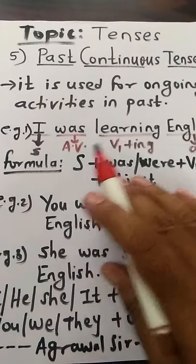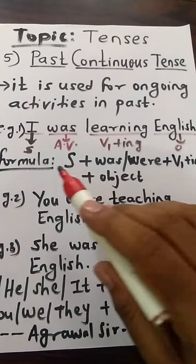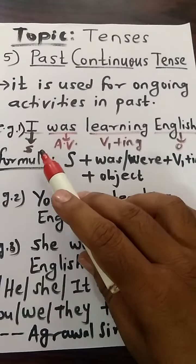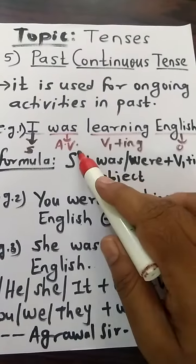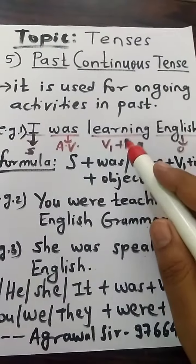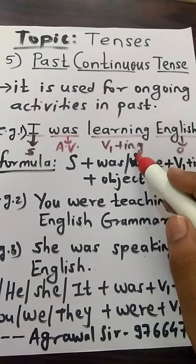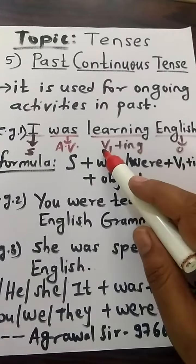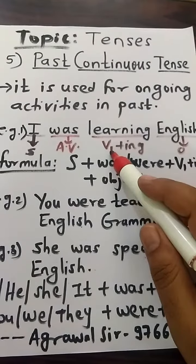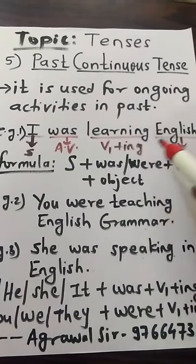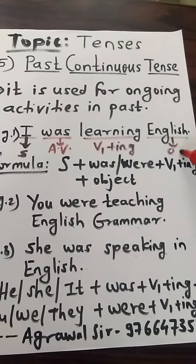Example 1: I was learning English. 'I' is the subject. 'Was' is the auxiliary verb. 'Learning' is the present participle — you can also say it is V1 plus ing. 'English' is the object.